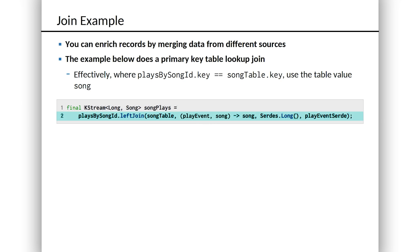As you use Kafka streams and you build systems out with this API, you're going to do this all the time. Joining is going to become hopefully a second nature thing for you. So on line two of this listing, we're calling the left join method on plays by song ID. Now plays by song ID is the repartitioned stream we just created a moment ago.